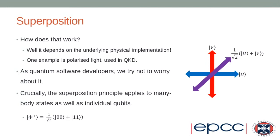Crucially, the superposition principle applies to many-body states just as well as individual qubits. For example, the state |Φ+⟩ = (1/√2)(|00⟩ + |11⟩) has a normalization factor of 1/√2 whose square gives 1. This means a system of two qubits is in an even superposition of both qubits being in state zero and both being in state one. Any combination of the four possible two-qubit states is a completely valid physical state — something we need to keep track of when emulating a quantum computer.